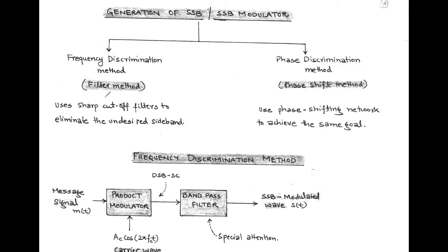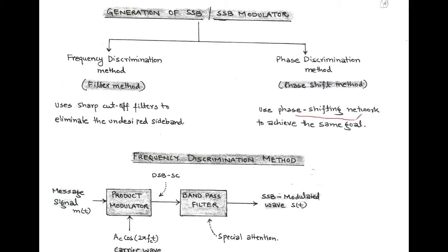In the filter method, we use a filter having sharp cutoff frequencies. With the help of this filter, we can eliminate the undesired sideband, whether it is upper sideband or lower sideband. In the case of phase discrimination method, we use a phase shifting network to achieve the same goal — to eliminate the undesired sideband, whether it is upper sideband or lower sideband.